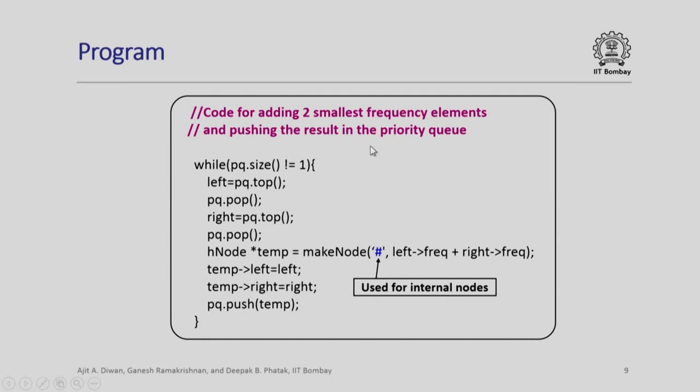All that we do is we check whether the size is not equal to 1. That means, we have number of things to look at. All that we do is whatever is the current PQ, we look at PQ.top and assign it to left and pop it out. Then we look at PQ.top again assign it to right and pop it out.